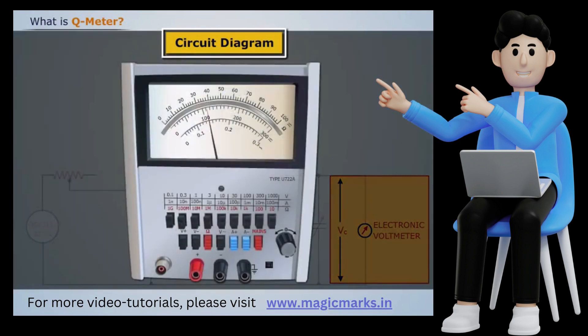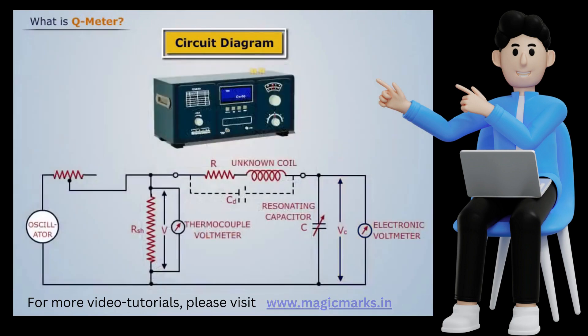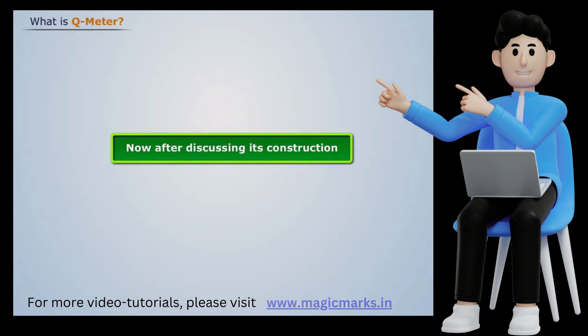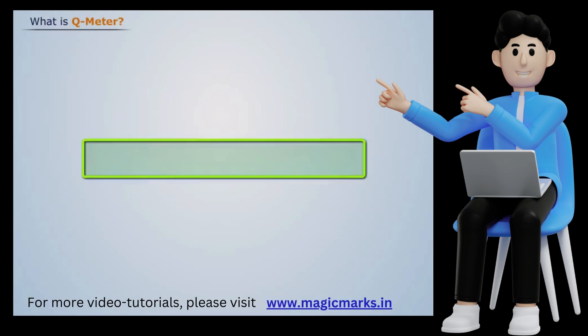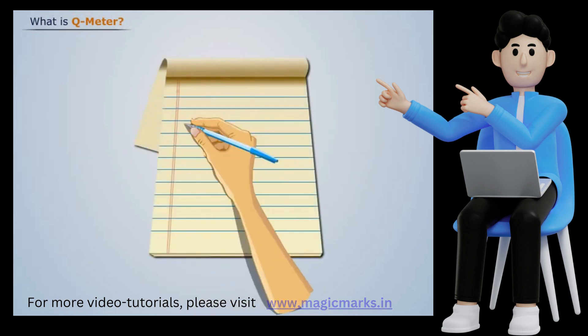Now after discussing its construction, here the Q meter is attached to an equipment to measure its inductance, the amount of energy it can store, along with the resistance and conductance showing how readily current moves through the circuit. All of this information can be used in a calculation to determine the quality factor.